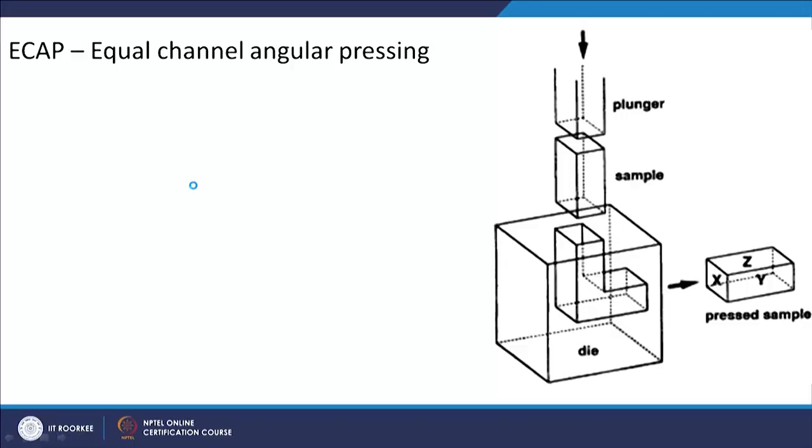These new processes are basically trying to achieve the goal that you do not change the shape of the material or the cross-sectional area, and still you should be able to impose strain. That is why these are all shear-based processes. One of them may not be shear-based, but I will let you know which one that is.